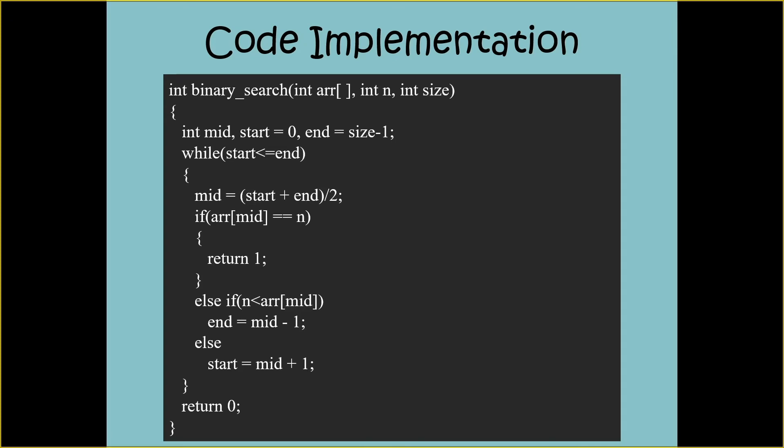Now let's understand the implementation of binary search in C++. The function binary_search that I've written here has return type of int. The function accepts three parameters: arr which is my array and already sorted, variable n which is the element to be searched, and size which contains the size of the array. The function will return value 1 if the element is found in the array, else it will return 0.